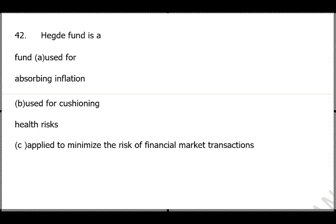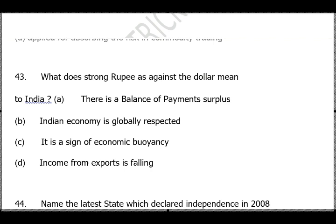Question 42: What is a hedge fund? The answer is option C. It is basically applied to minimize the risk of financial market institutions. The primary aim of a hedge fund is minimizing risk — when we make financial transactions in the market, we use hedge funds to safeguard ourselves.